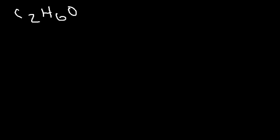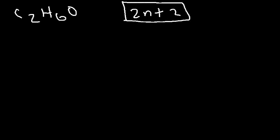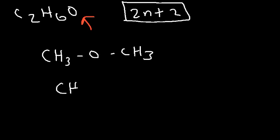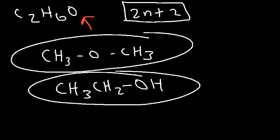For one final example: how many constitutional isomers can you draw for C2H6O? We have a single oxygen, which could be an ether or an alcohol since we have a saturated compound. For two carbons the maximum number of hydrogens is six — using the formula 2N+2, where N=2, you get six, confirming it's saturated with no double bonds, no rings, and it can't be a ketone or aldehyde. Because of the oxygen, this is either an ether or an alcohol. So we can draw an ether or an alcohol — those are the two constitutional isomers for this formula.